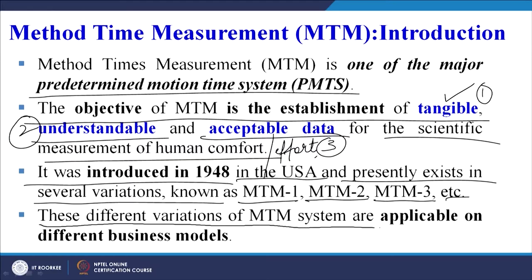MTM 1 contains various basic body motions, MTM 2 its basic motions, and MTM 3 its basic motions — you can refer back to the previous discussion on how MTM is built up. These different variations of the MTM system are applicable to different business models. Depending upon the conditions and the nature of work being done, we have to decide whether to use MTM 1, MTM 2, or MTM 3.